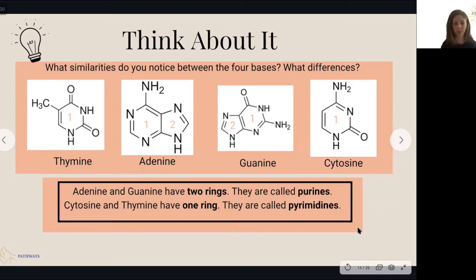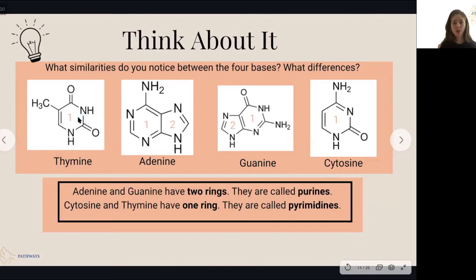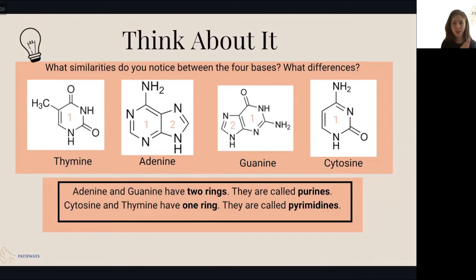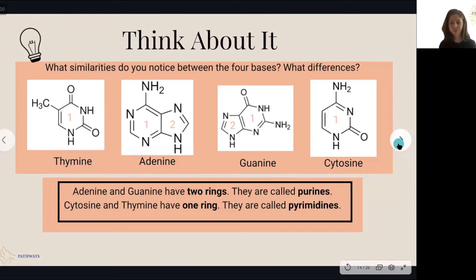One similarity is that adenine and guanine both have two rings, whereas cytosine and thymine only have one ring. The nitrogenous bases that have two rings — adenine and guanine — are put into a category called purines. The nitrogenous bases that only have one ring — thymine and cytosine — are put into a category called pyrimidines. Keep those words in mind as we continue through the presentation.